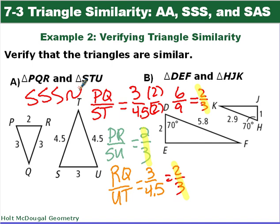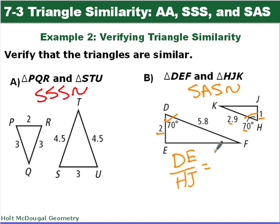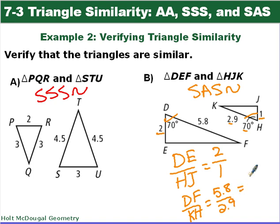Now we look at triangle DEF and triangle HJK. Looking at the picture, we notice a side, an angle, and a side on each triangle — so we're thinking side-angle-side. But we have to verify it. Side DE corresponds to HJ: 2 over 1. Side DF corresponds to KH: 5.8 over 2.9, which simplifies to 2 over 1. The corresponding sides are proportional and the included angles are congruent, so SAS similarity applies.